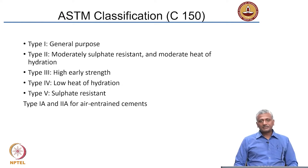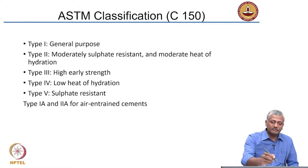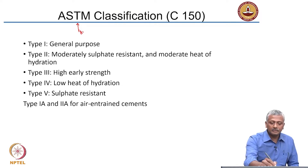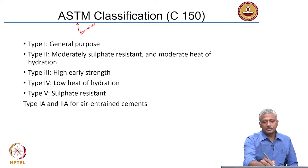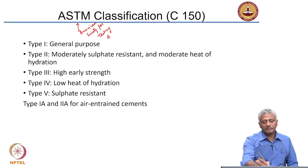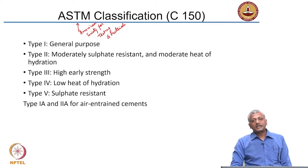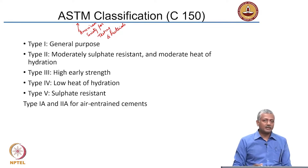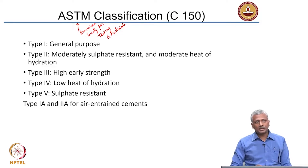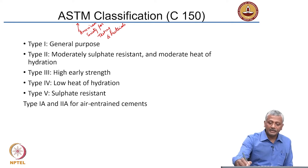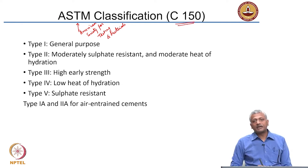I am going with this universally applied classification called ASTM, or American Society for Testing and Materials. ASTM basically brings out standards on all kinds of materials, processes, test methods, and so on. The ASTM classification for cement is included in ASTM C150.